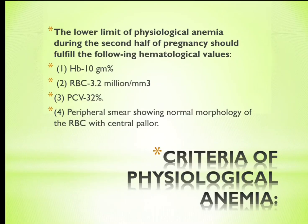Criteria of physiological anemia: The lower limit during the second half of pregnancy should fulfill the following hematological values — hemoglobin 10 g/dL or less; red blood cells 3.2 million per cubic millimeter or less; packed cell volume 32% or less; peripheral smear showing normal morphology of red blood cells with central pallor.